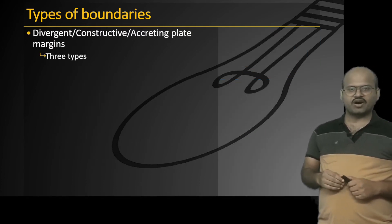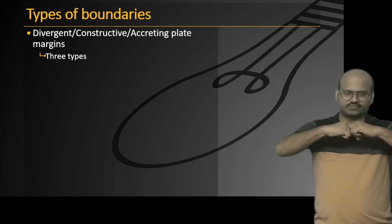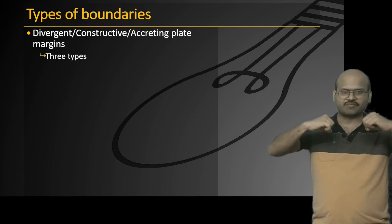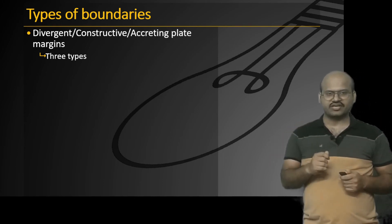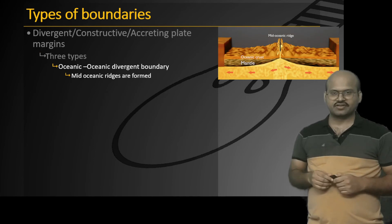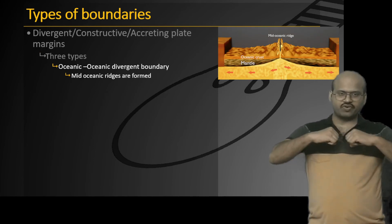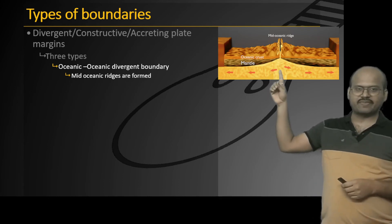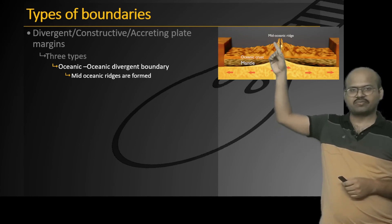Another type is the divergent boundary, where two plates move away from each other. Based on the types of plates moving apart, we classify divergent boundaries into types. The first is the ocean-ocean divergent boundary, where two oceanic plates move away from each other. Magma comes up at the boundary and forms two parallel mountain-like structures separated by a ridge — this is called the mid-oceanic ridge.